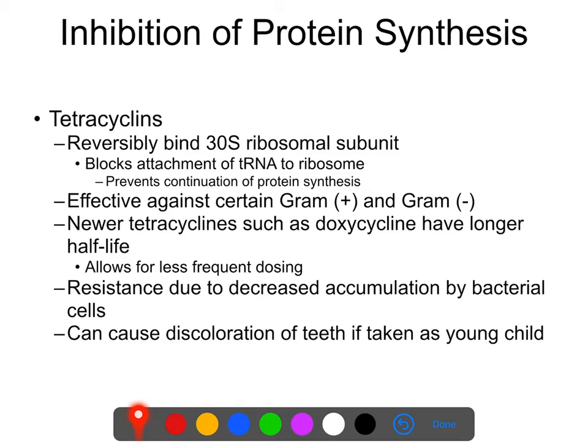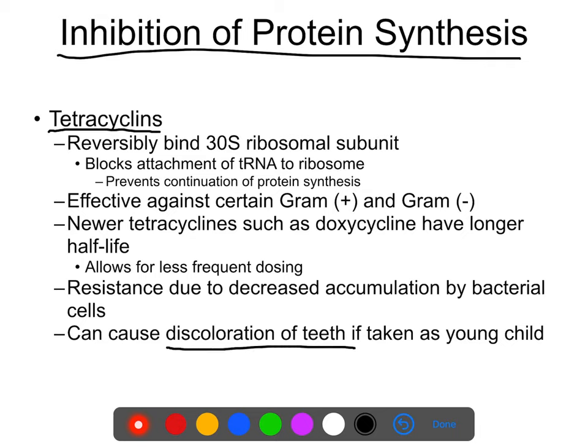For inhibition of protein synthesis, there are many drugs in this category. I want you to know tetracyclines as a class — you should know that they inhibit protein synthesis, and that tetracyclines are generally contraindicated for young children because they can cause discoloration of the teeth and, in certain circumstances, malformation of the teeth and jawbone.